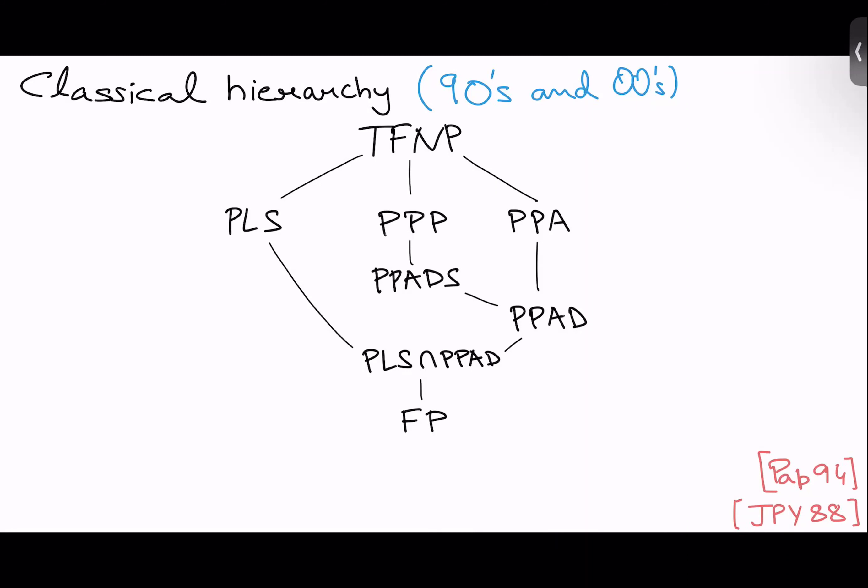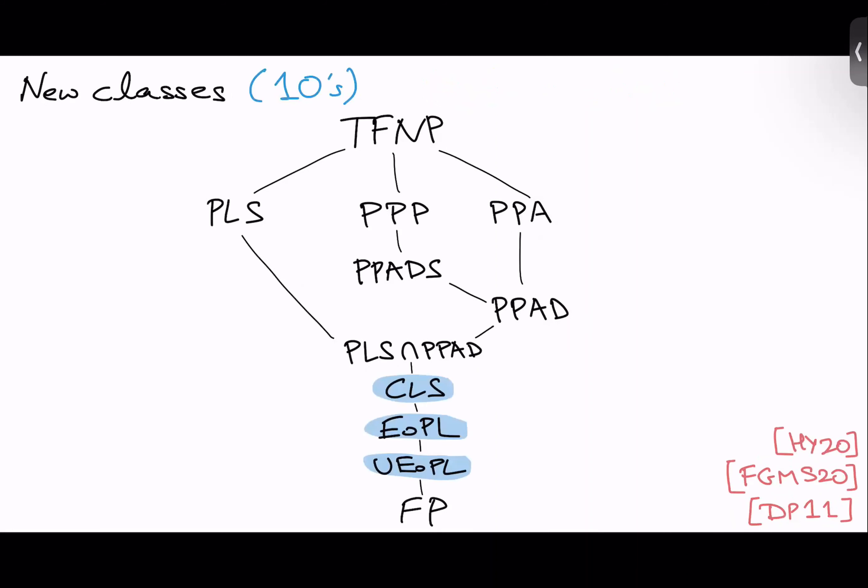And I've defined three of these classes for you. I also put this weird thing here called PLS intersection PPAD. The only reason I did that is because a lot of problems that we care about lie in both PLS and PPAD. And below that, all the way down here, FP, which is just all relations solvable in polynomial time.